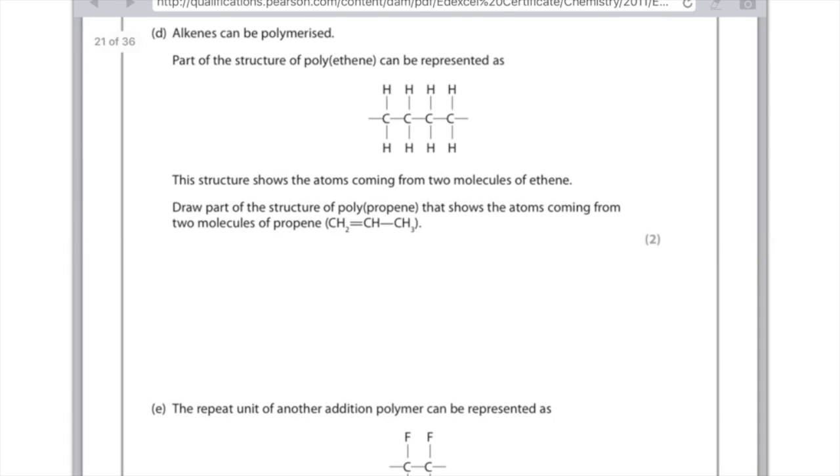Alkenes can be polymerized. Part of the structure of polyethene can be represented as... This structure shows the atoms coming from two molecules of ethene. Draw part of the structure of polypropene that shows the atoms coming from two molecules of propene. So use polyethene as your guide, but just make sure that the new molecule you draw has three carbons per each repeating subunit. So draw that, and then draw your third carbon for the fact that it is polypropene up here, so it doesn't get in the way. Do this, and then just do it again because there are two subunits. And then extend the line here. Perfect.